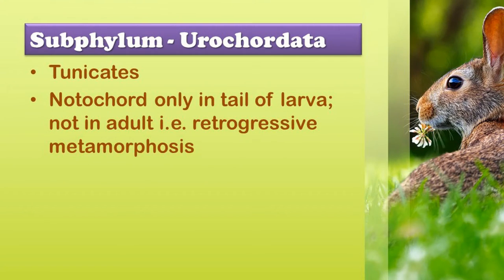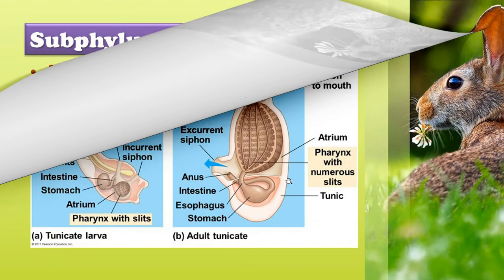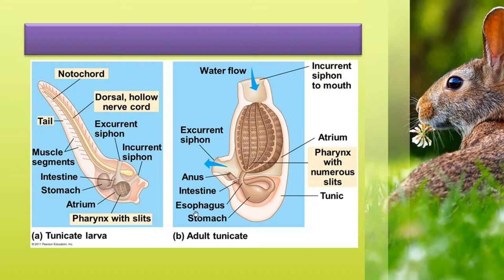Subphylum Urochordata. 'Uro' means tail. They are exclusively marine. The notochord is only restricted to the tail region of the larval stage and is absent in the adult — this is called retrogressive metamorphosis. Adult forms are sac-like tunicates.